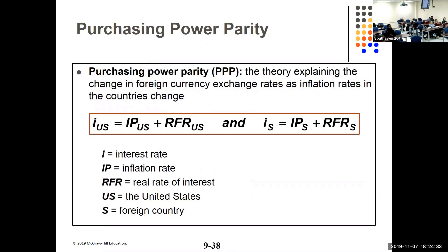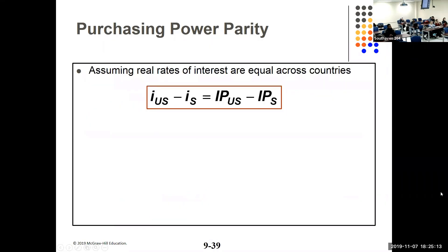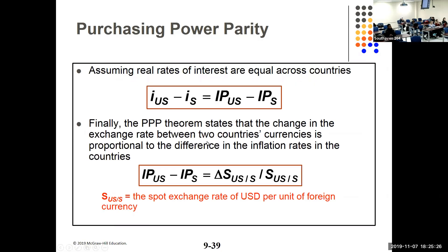Here are the parity relationships: purchasing power parity, interest rate parity, and the international Fisher effect. Purchasing power parity says the change in a foreign currency exchange rate changes as inflation rates change. The nominal rate is the risk-free rate plus expected inflation. Assuming equality across countries, the difference in the inflation premium should explain the difference in rates. Ultimately, the change in the exchange rate is proportional to the difference in the inflation rate between two countries, where the change equals (S_f - S_d) using the spot rates.